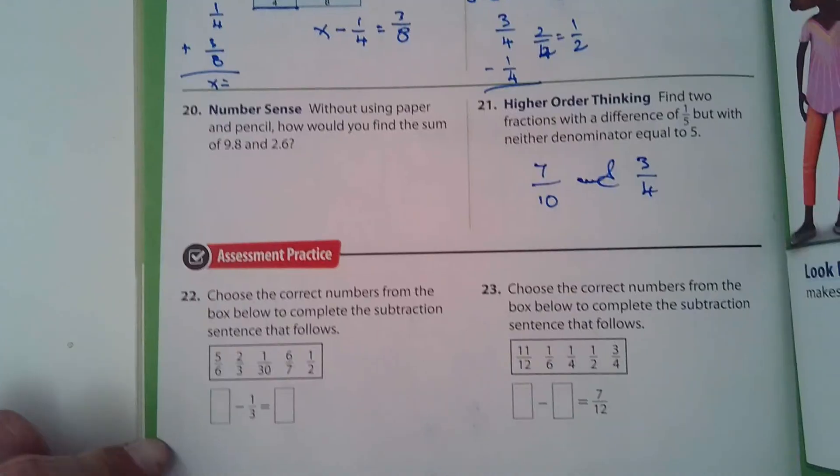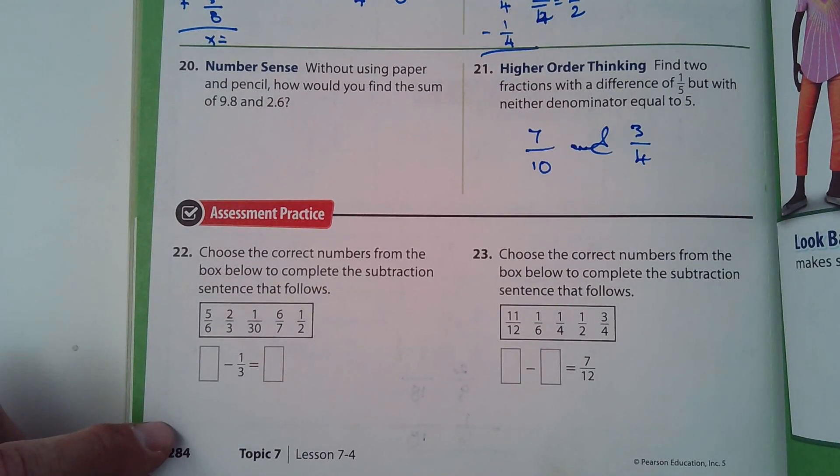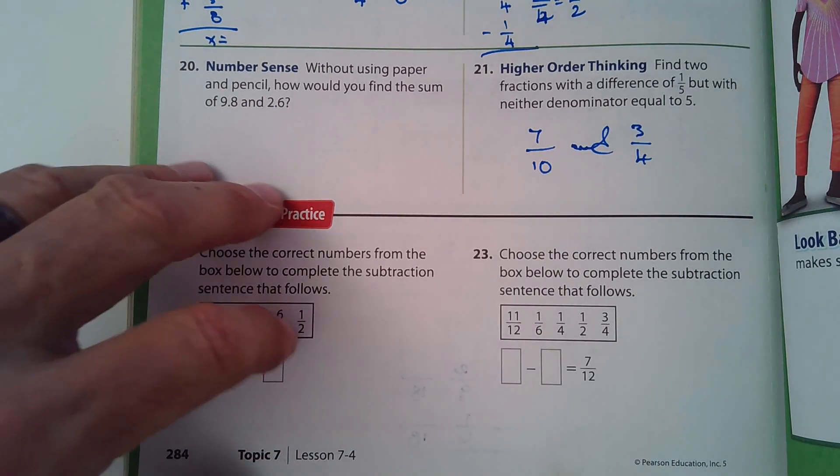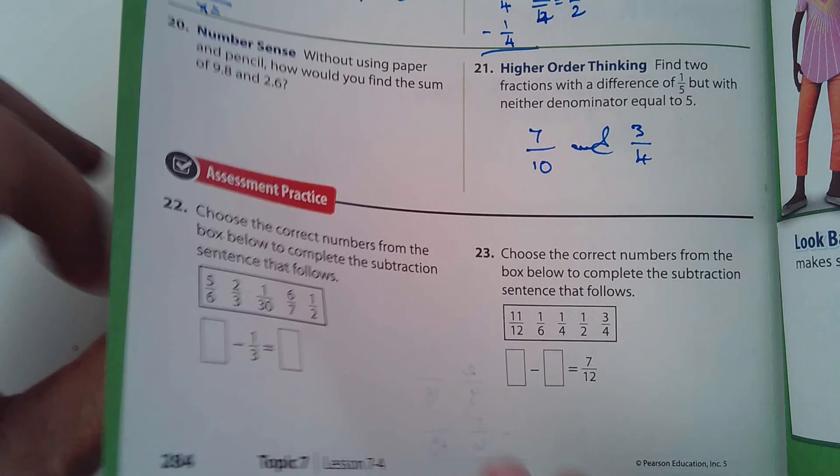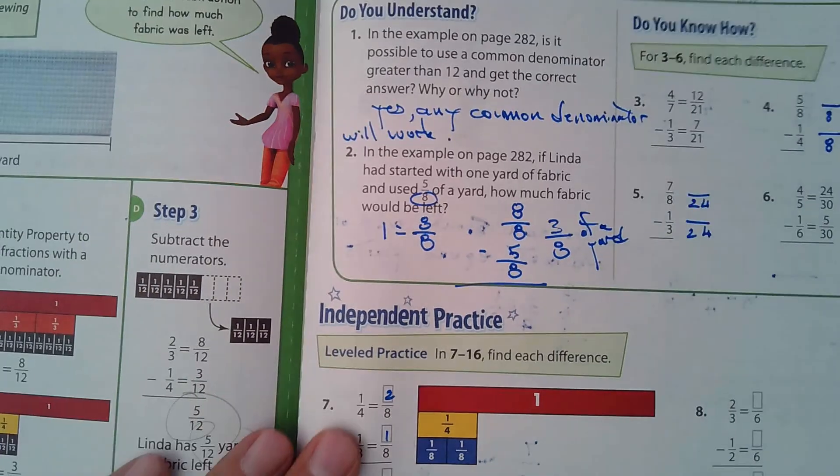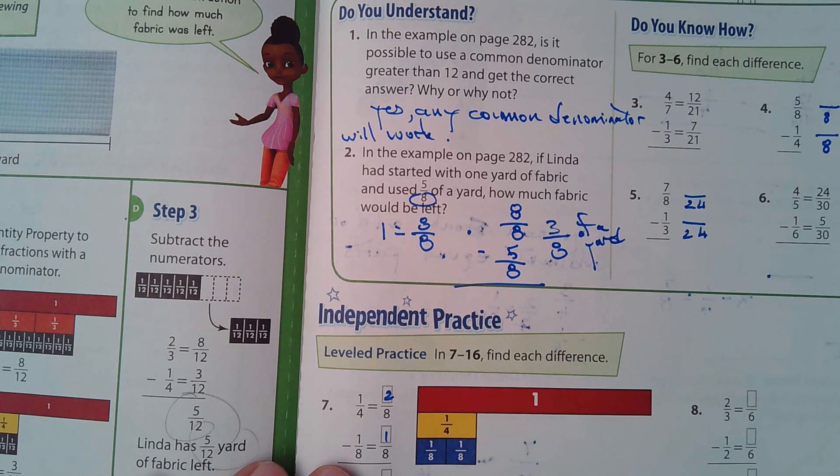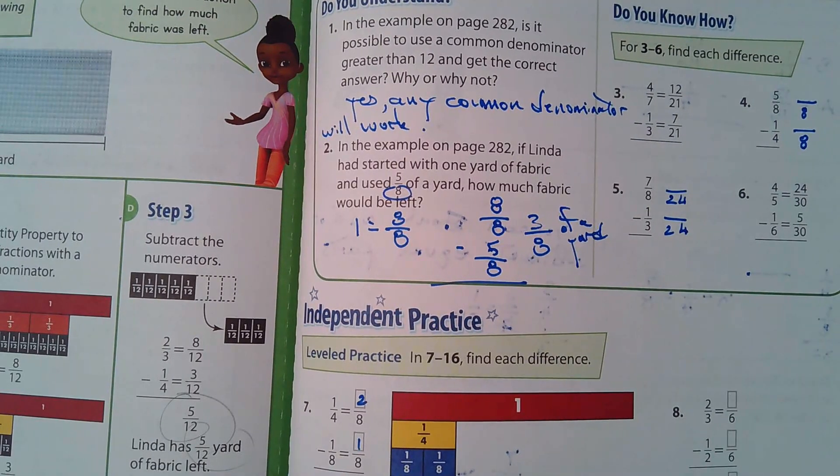22 and 23, I think you can do on your own. Choose the correct numbers from the box to complete the subtraction problem. Yep, you guys can do that. Okay, that's it. Reasonably easy lesson because we're just subtracting now. And when we're subtracting, just get the common denominator and subtract the numerators. Okay, that's it. I will talk to you guys later.